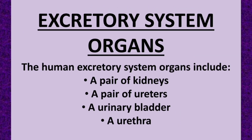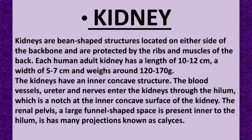The human excretory system organs include a pair of kidneys, a pair of ureters, a urinary bladder, and a urethra.